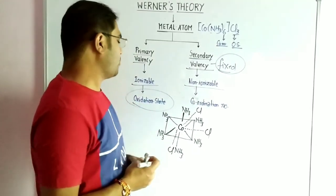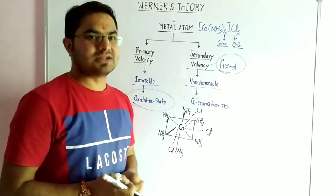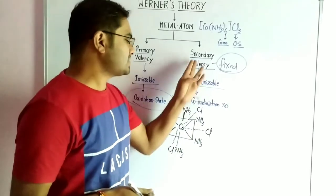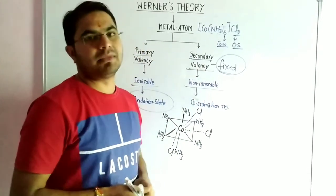In modern terminology, primary valency suggests the oxidation state, and secondary valency gives the coordination number.